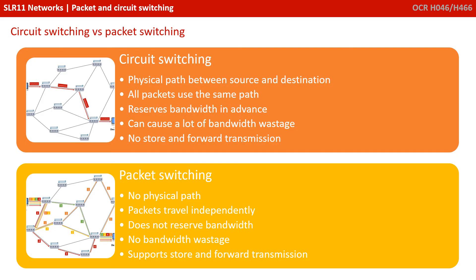So here's a little summary. With circuit switching, there is a physical path between source and destination. All packets use the same path and it reserves the bandwidth in advance. It can cause a lot of bandwidth wastage and there's no store-and-forward transmission.